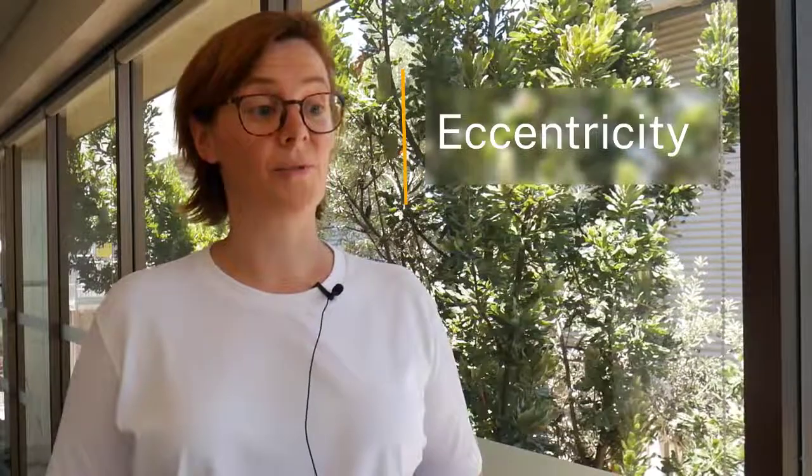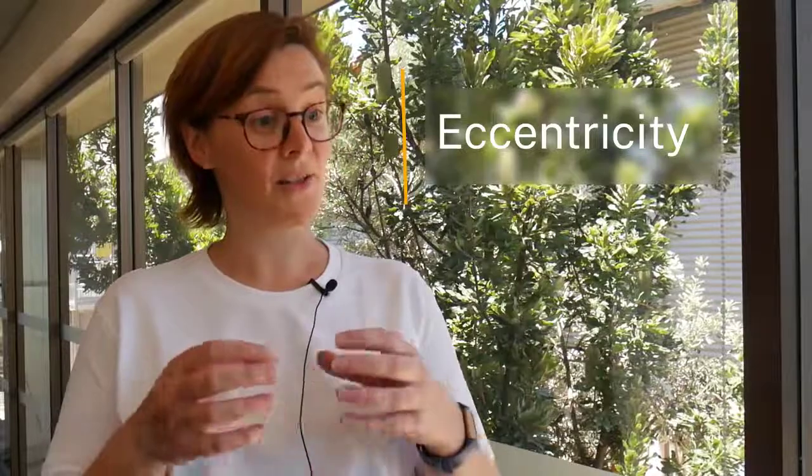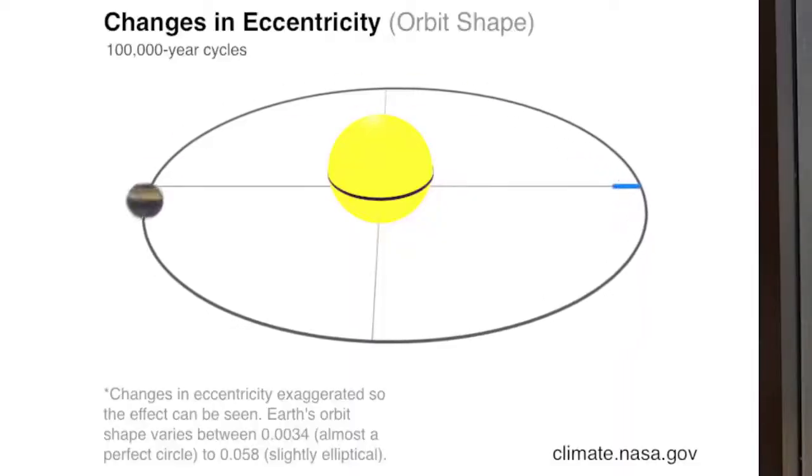Eccentricity refers to the shape of the Earth's orbit around the Sun. The Earth doesn't travel around the Sun in a perfectly circular shape. It varies between a near-perfect circle and slightly elliptical.